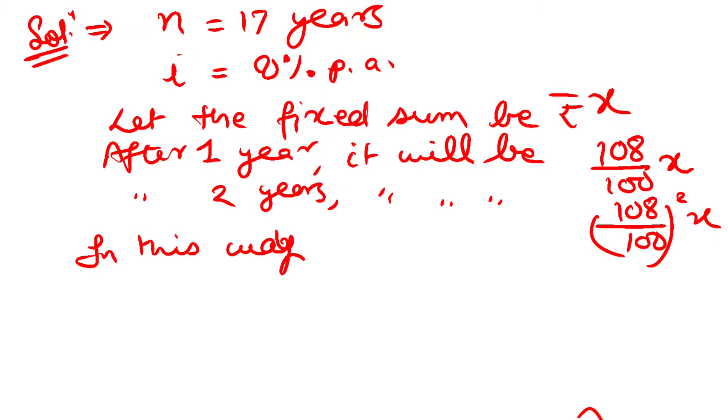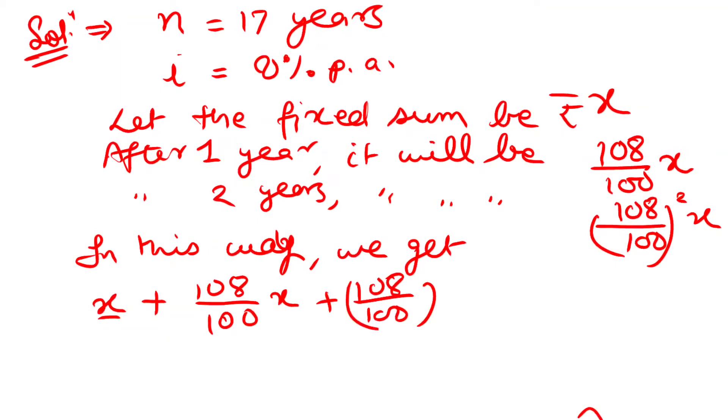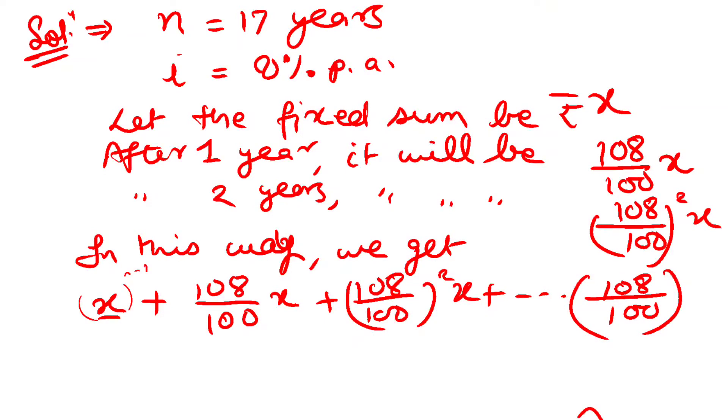The total sum we will get is: first year sum x, plus second year 108 upon 100 times x, plus 108 upon 100 whole square times x, and so on till 17th year, which is 108 upon 100 to the power 16 times x. This has become a geometric progression series.